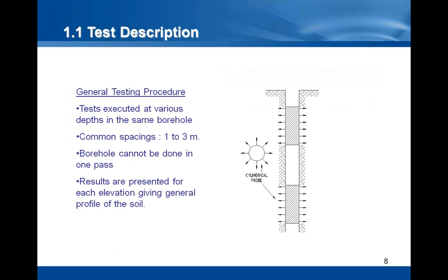Pressure meter tests are normally carried out at different depths in the same borehole. The results are integrated to give a profile of the pressure meter parameters of the soil. Common spacings between tests vary from 1 to 3 meters. The borehole should not be made in a single pass, but in steps: 1. Drilling the borehole to the first testing depth, 2. Removing the drilling equipment from the borehole, 3. Lowering the pressure meter probe to the testing depth, 4. Running the test, and 5. Removing the probe. This process must be repeated for each test. Following this procedure, about 8 tests in the same hole per day can be done.